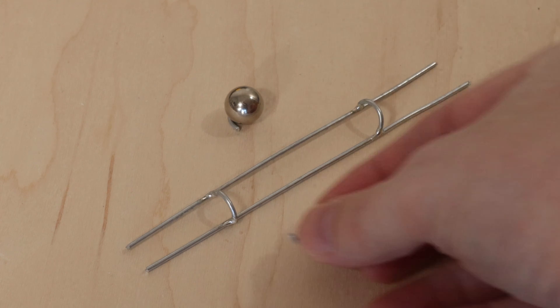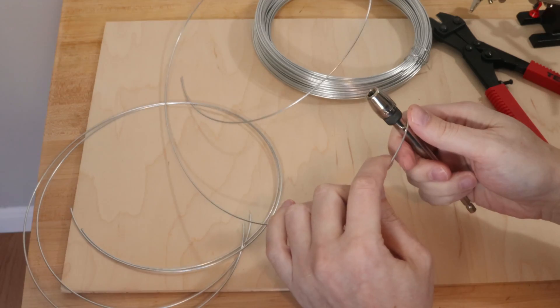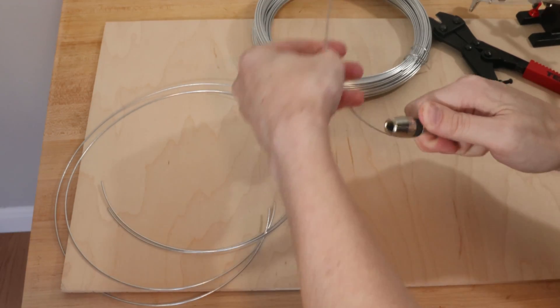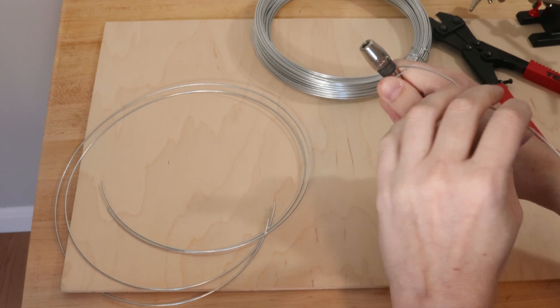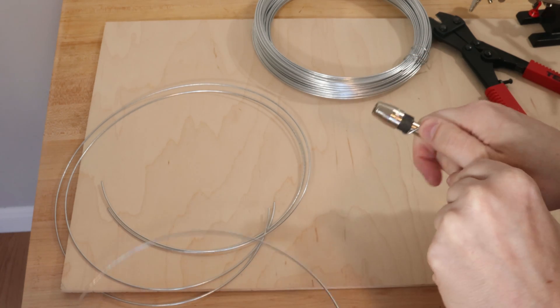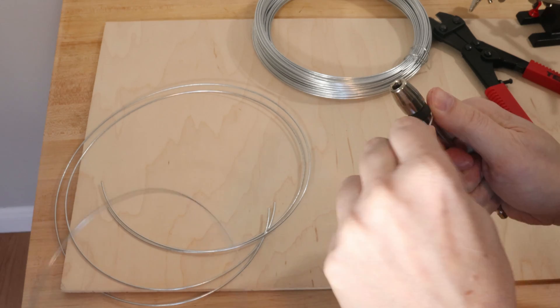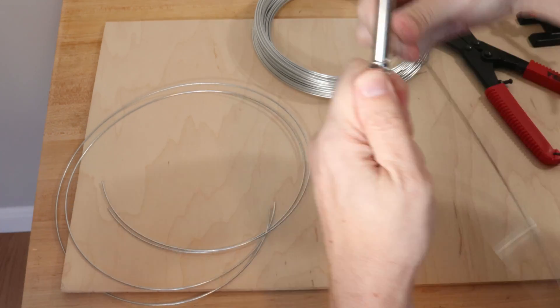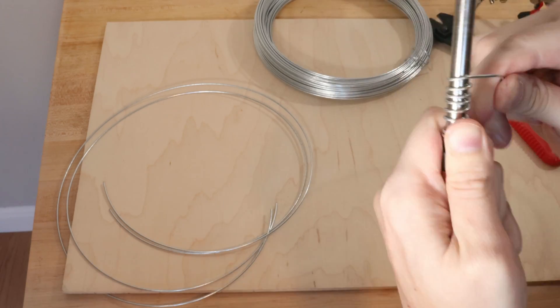Next up are the little connecting bits. These actually connect the rails together. These are formed by wrapping a spiral of wire around a form. Here I use this extension bit. You can create the coil of wire that creates these circles.